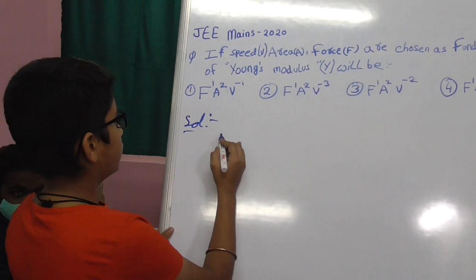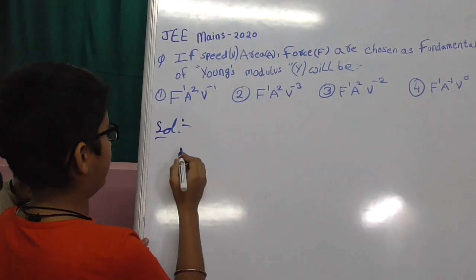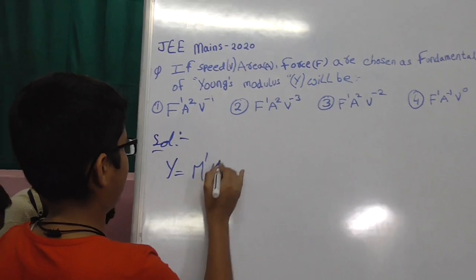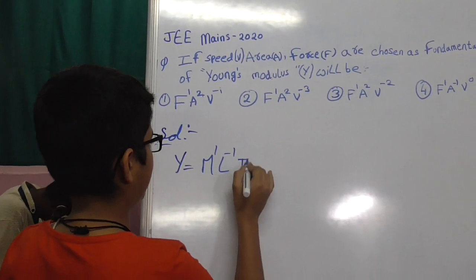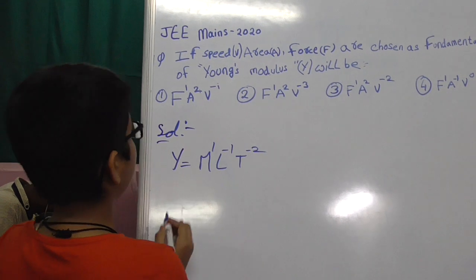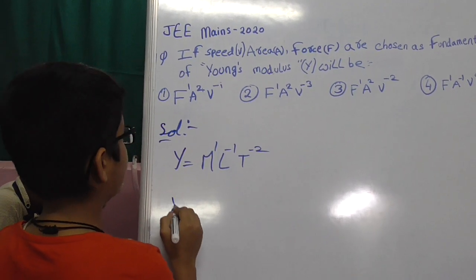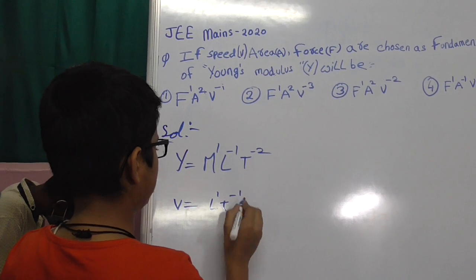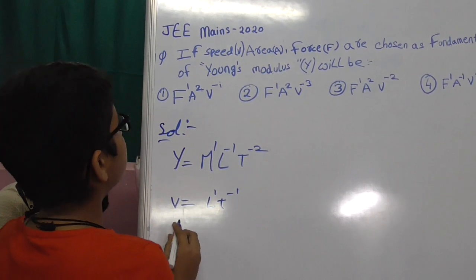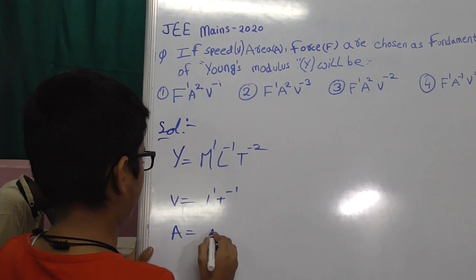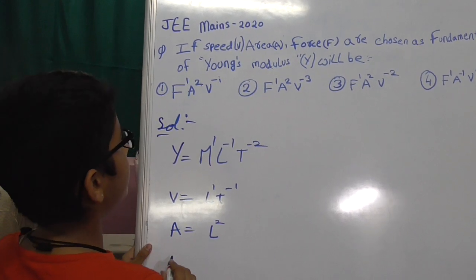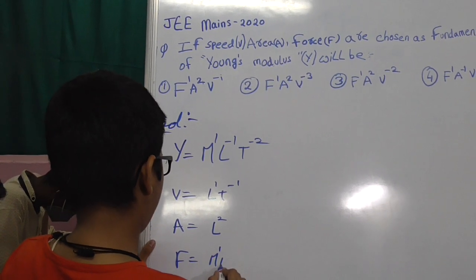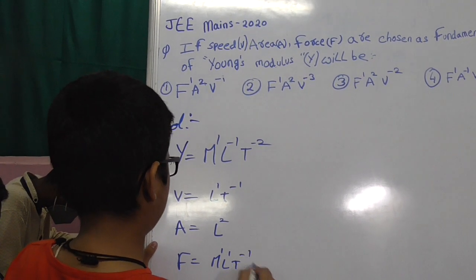Let's start. The dimensional formula of Young's modulus is M power 1, L power minus 1, T power minus 2. The dimensional formula of speed V is L power 1, T power minus 1. The dimensional formula of area A is L squared. The dimensional formula of force F is M power 1, L power 1, T power minus 1.